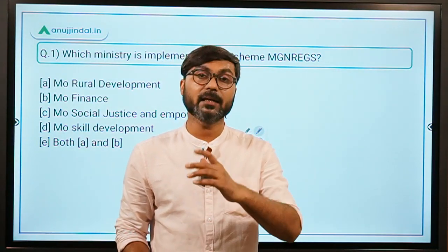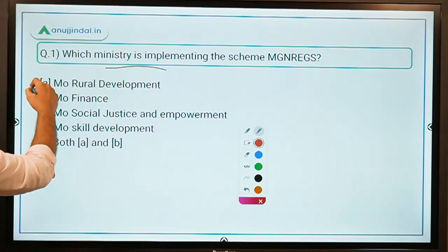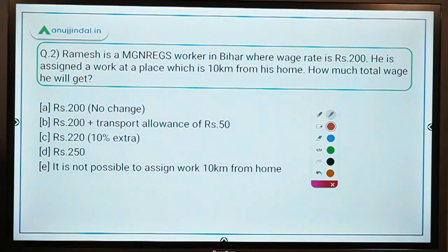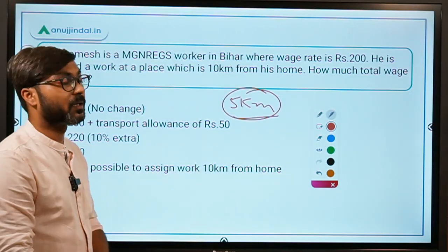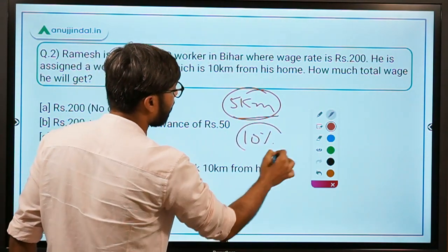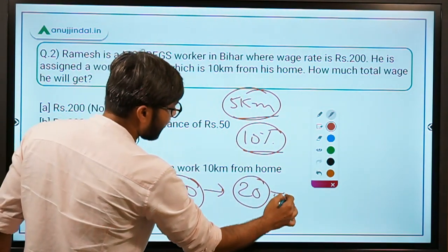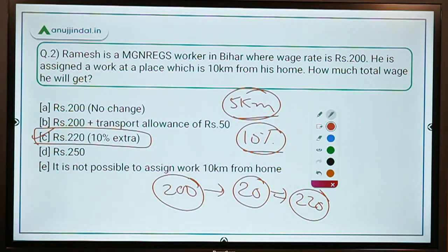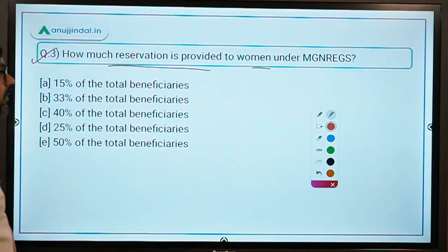Now let's discuss some questions that can be asked in your exam. Question 1: Which ministry is implementing the scheme MNREGS? The answer is the Ministry of Rural Development. Question 2: Ramesh is a MNREGS worker in Bihar where the wage rate is rupees 200. He is assigned work at a place 10 kilometers from his home. Since it is beyond the 5 km radius, he gets 10 percent extra. So total wage = 200 + 20 = rupees 220. Question 3: How much reservation is provided to women under MNREGS? One-third, i.e., 33 percent.